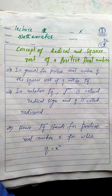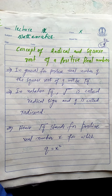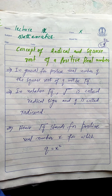Welcome dear students. Today is lecture number 12 of class metric subject mathematics. In lecture number 11 we covered some points and topics of exercise 2.4. Now we are going to start exercise number 2.5, and the starting topic of that exercise is the concept of radical and square root of positive real numbers.